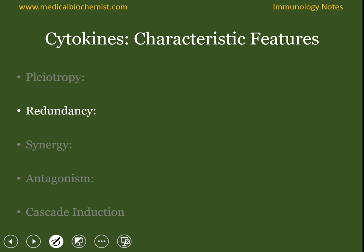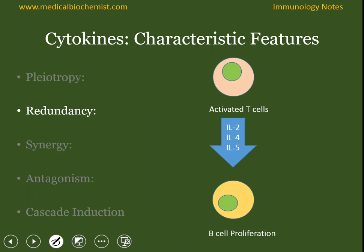The second property is redundancy. Pleiotropy is one cytokine with multiple functions, and redundancy means one function with multiple cytokines. If you look at IL-2, IL-4, and IL-5, all three cytokines have a similar function — proliferation of B cells.